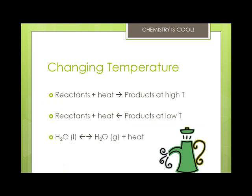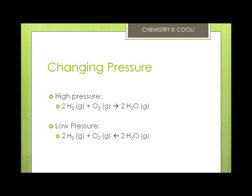Reactions either require or release heat. Endothermic reactions go faster at higher temperatures, and exothermic reactions go faster at lower temperatures. All reversible reactions will be exothermic one way and endothermic the other. As you raise the temperature, the reaction proceeds in the endothermic direction. As you lower the temperature, the reaction proceeds in the exothermic direction. As pressure increases, the reaction will shift in the direction of the least concentrated gases. Low pressure will go to the side with the most gases.